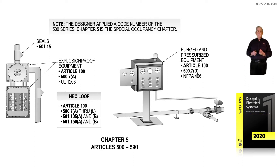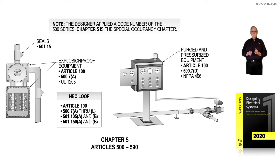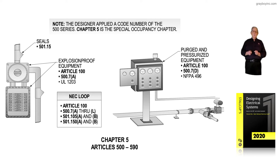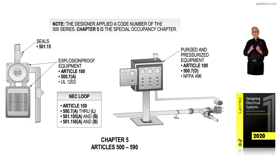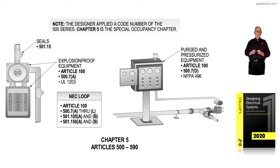Notice we have 501.15 which deals with seals. If we're selecting wiring methods we go to 501.10. If we were selecting special type pieces of equipment we'd go to 501 and through the section dealing with the type of equipment being installed. That's explosion-proof equipment, and the definition is now in Article 100 Part 3. 500.7A deals with protection techniques used in classified locations — explosion-proof equipment — along with UL 1203, which covers much more about explosion-proof equipment.